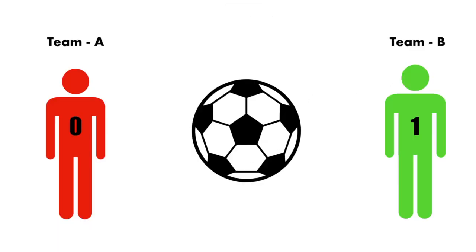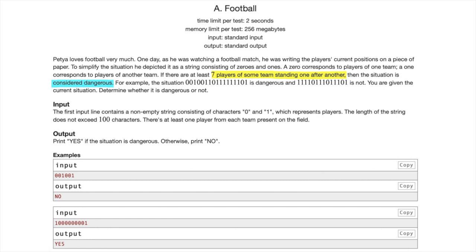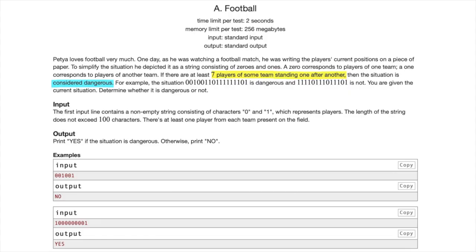The major crux of this question is: you are given a string of numbers, either one or zero. Zero represents the players of the first team — let that team be A — and one represents the players of the second team — let that team be B. If there are seven players of the same team standing one after the other, the situation is considered dangerous. Our task is to find whether the given situation is dangerous or not, printing 'yes' or 'no'.